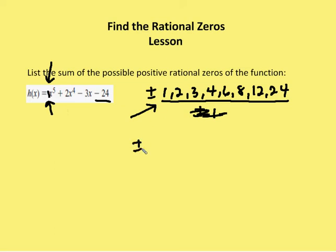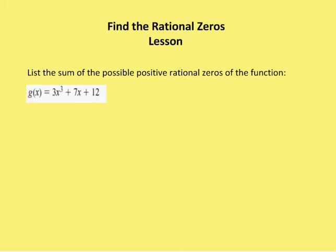So I'm going to add plus or minus 1, 2, 3, 4, 6, 8, 12, and 24. And if I list the sum, you can see that everything cancels out. Plus or minus one equals zero, plus or minus two equals zero. So the answer to this question is really somewhat of a trick question — it's actually just zero.